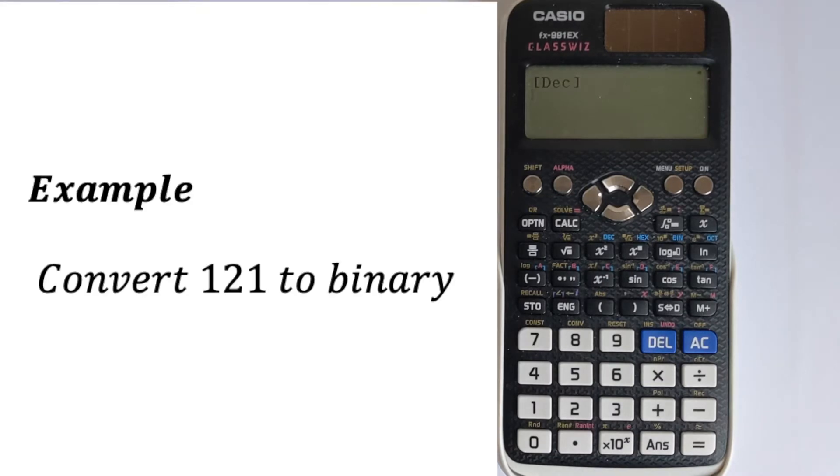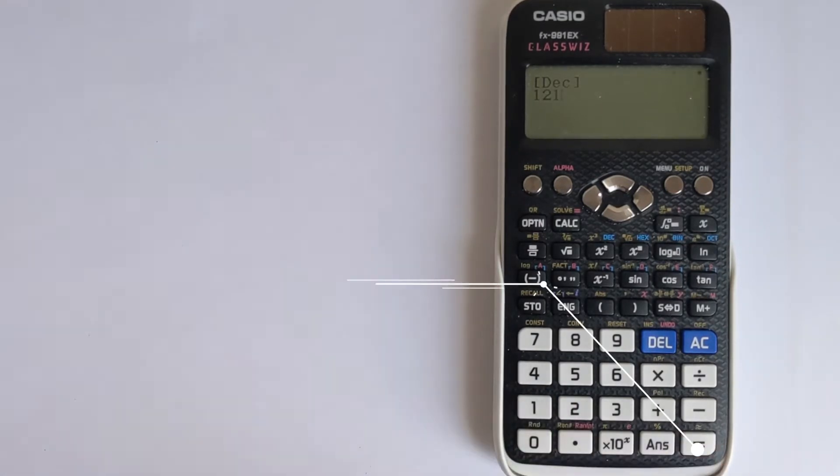Let's do an example: convert 121 to binary. We put in 121 then press equals. That's now in the calculator's memory.